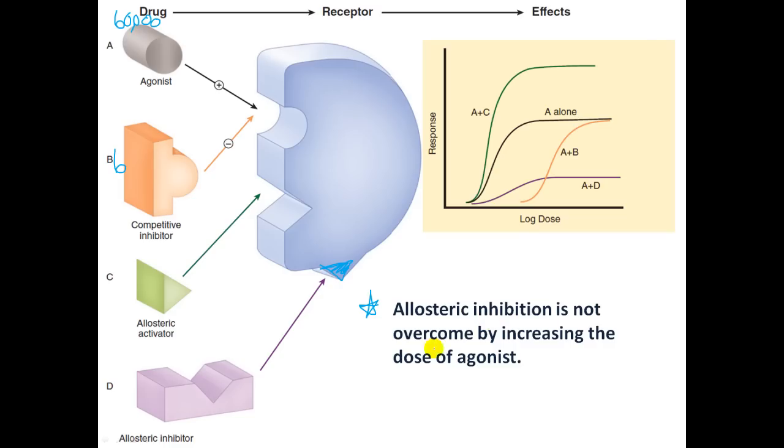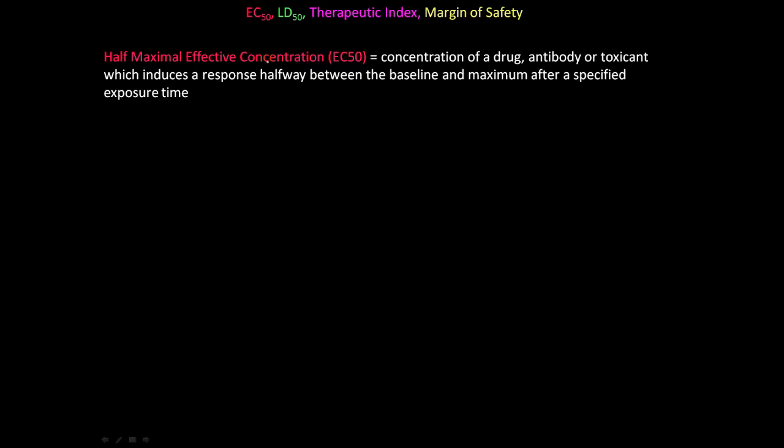So the allosteric inhibition is not overcome by increasing the dose of the agonist. So a few more things we need to talk about is the EC50, the LD50, therapeutic index, and margin of safety.